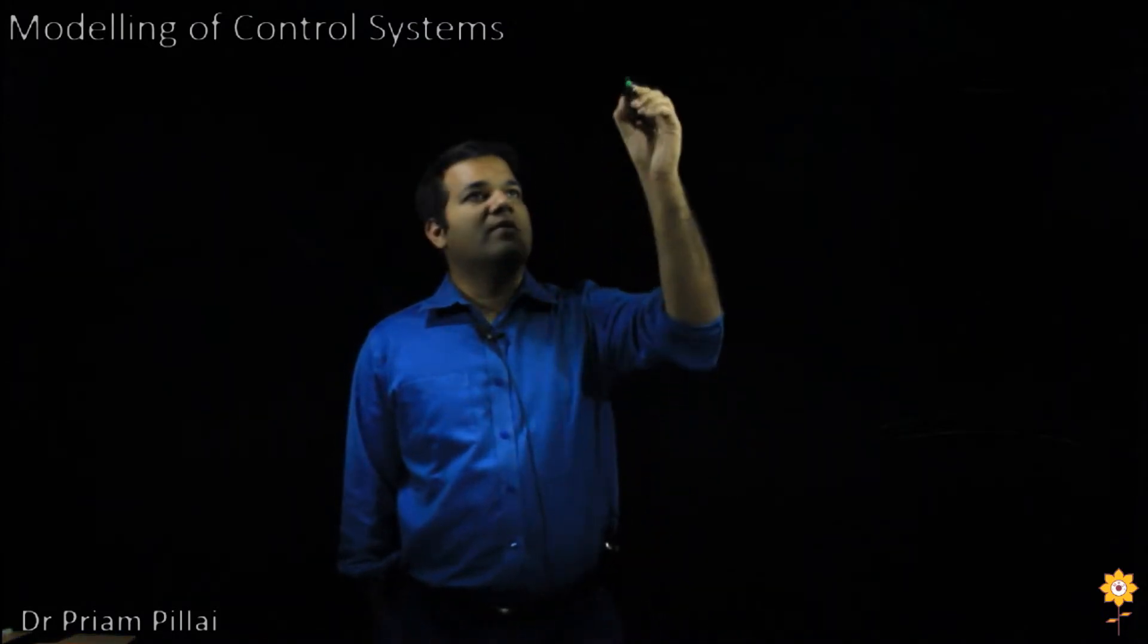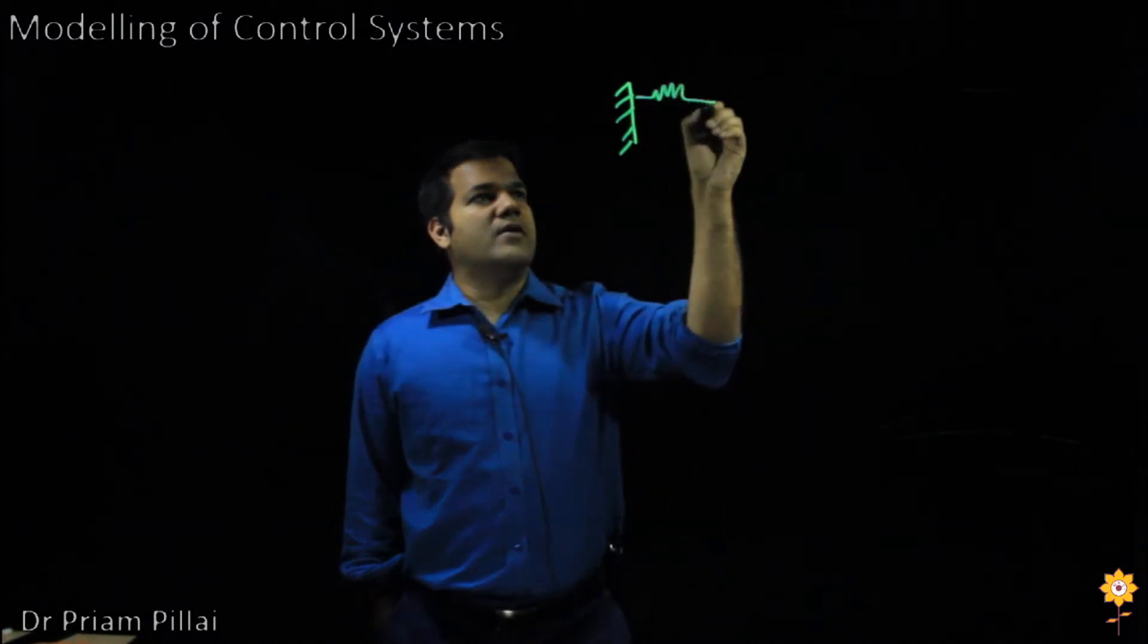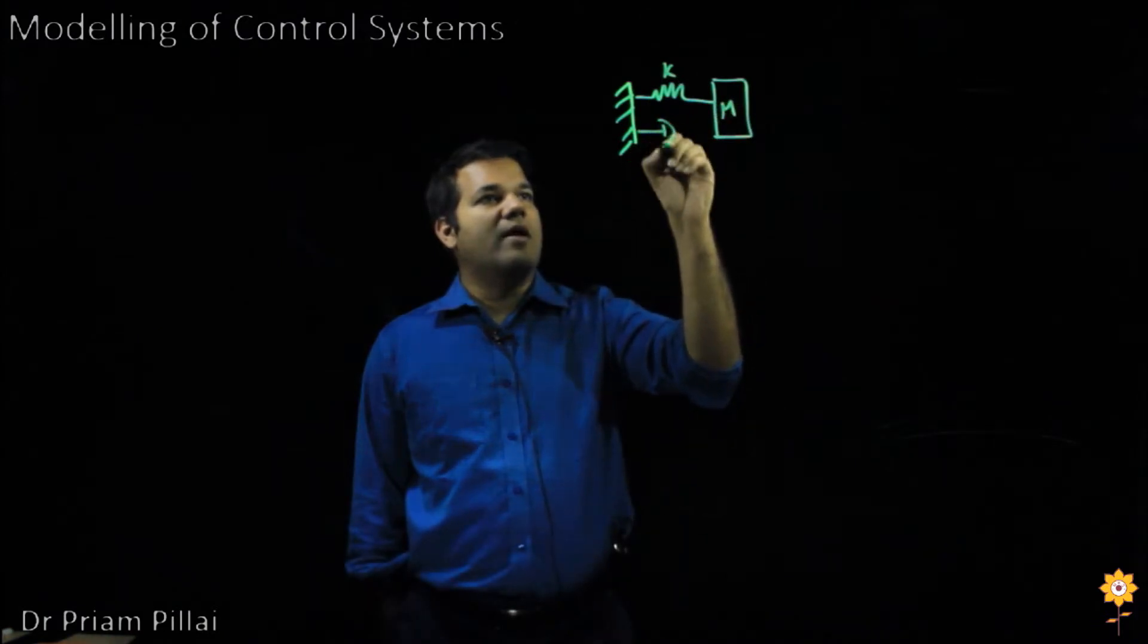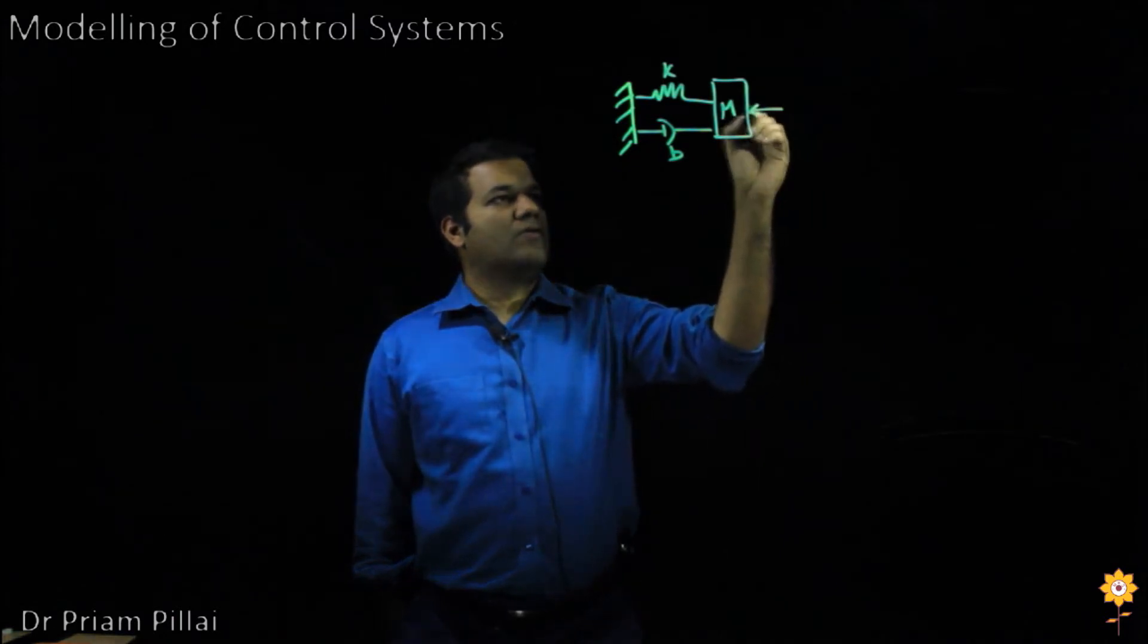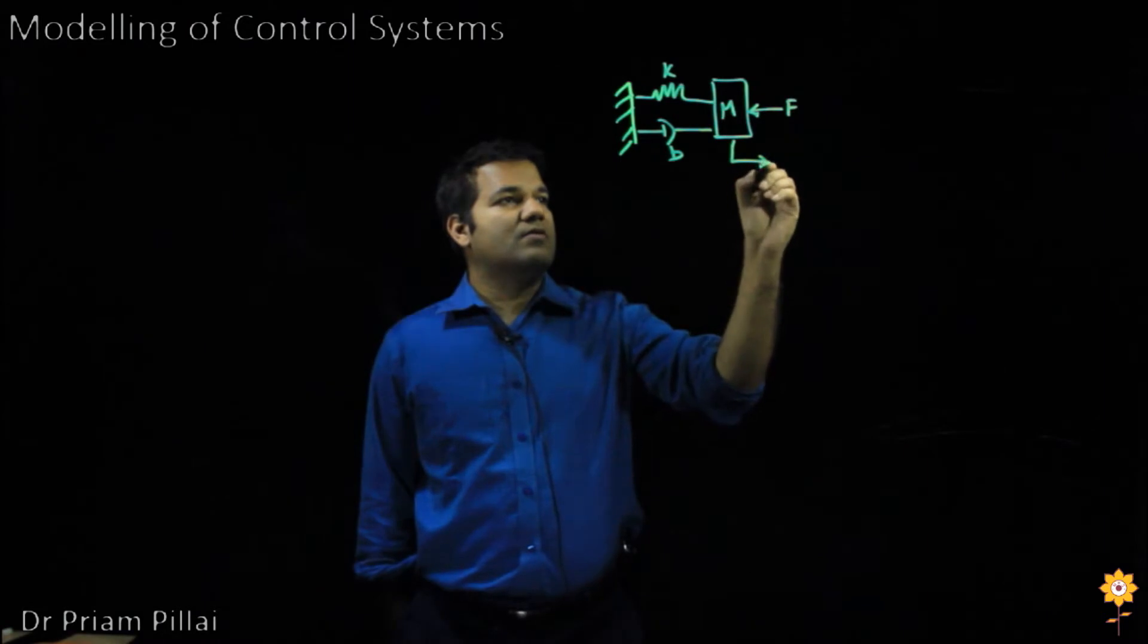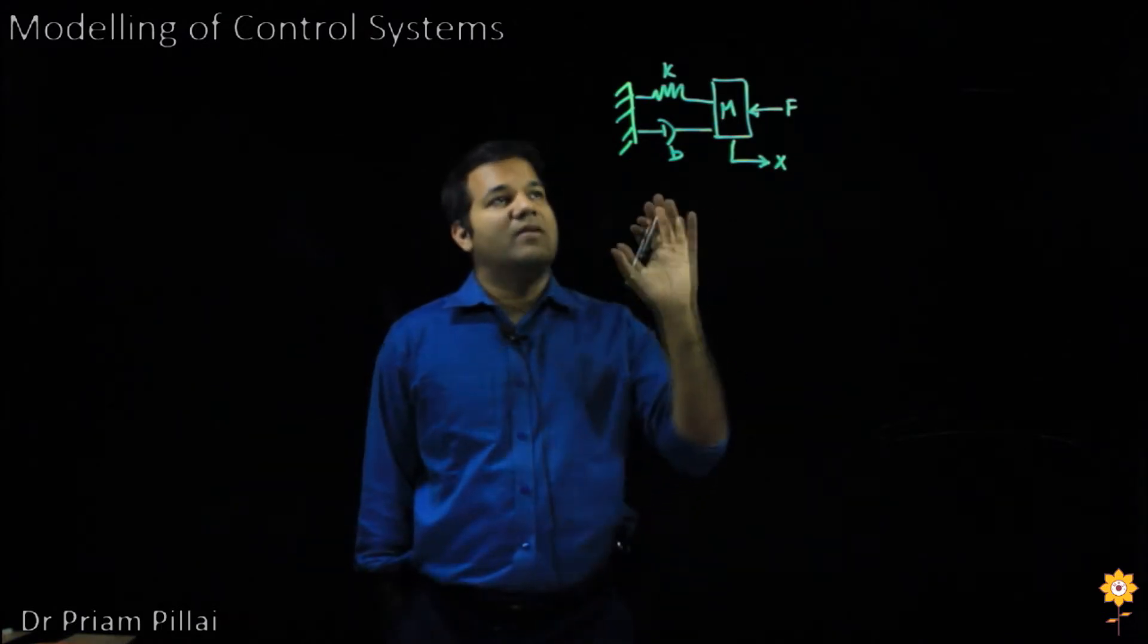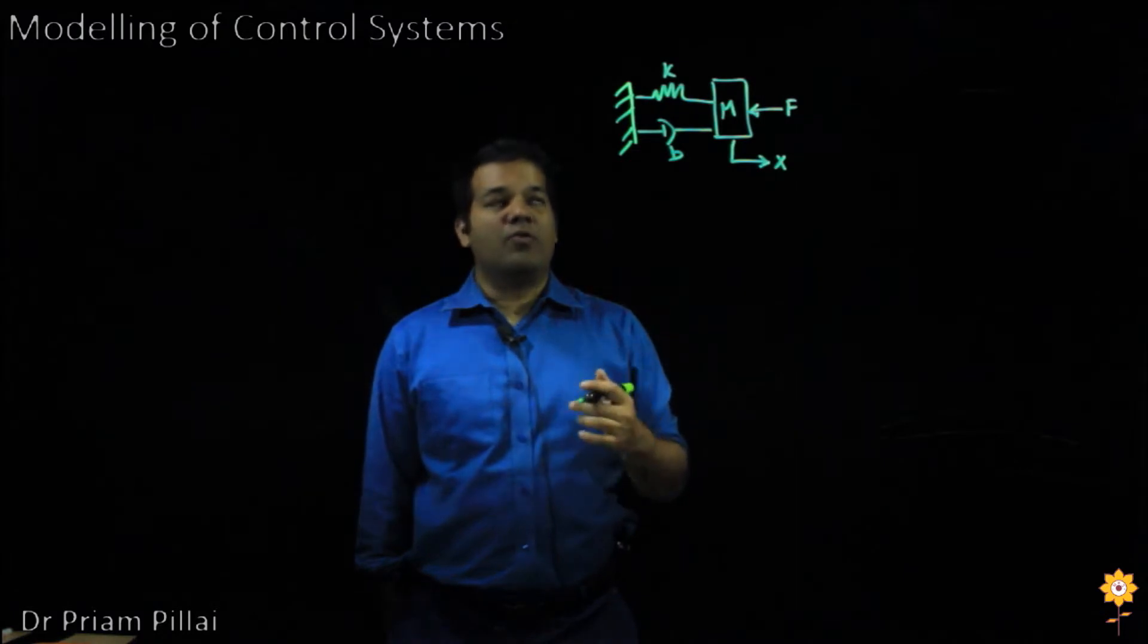We will start with considering a simple linear translational system having a spring, a mass, and a damper. We apply a force F to this mass and measure its position x. We would like to write down a simple mathematical expression that would govern the dynamics of this system, and we will do so by applying Newton's laws.